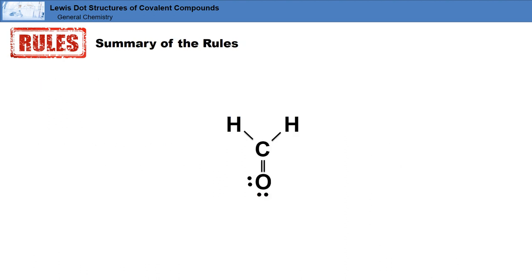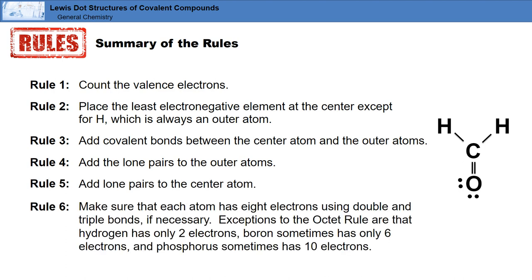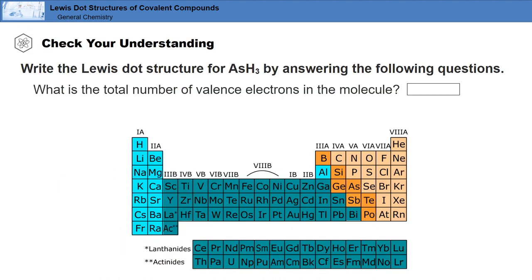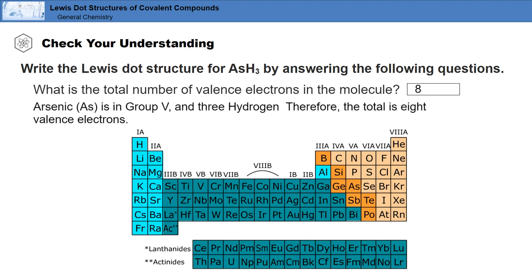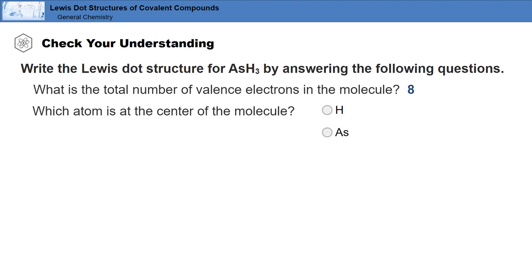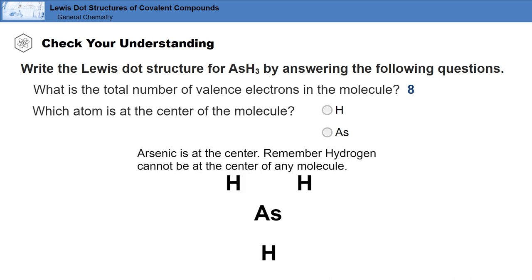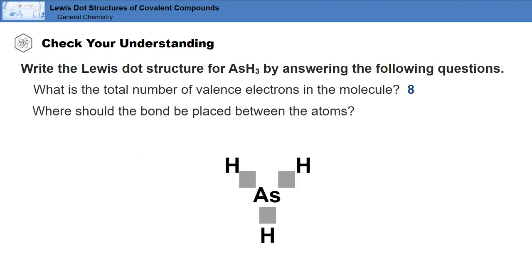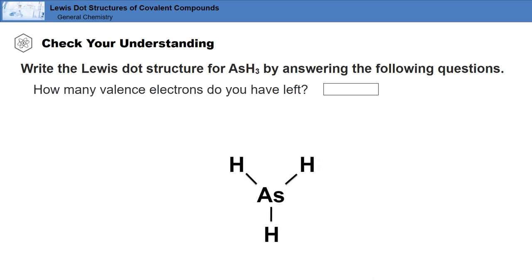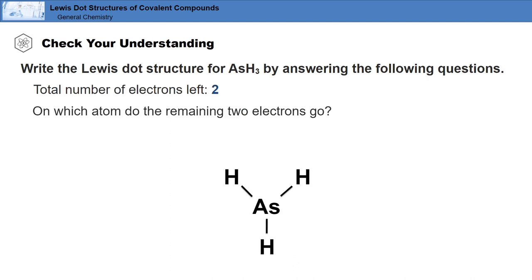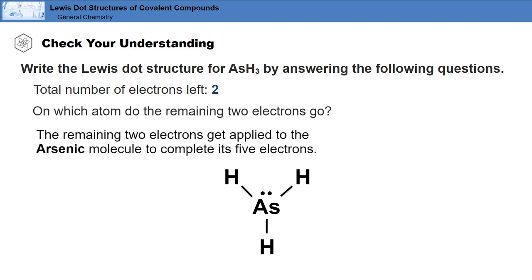Lewis dot structures show how electrons are distributed in molecules. There are six rules. Now let's check your understanding by answering the following questions. What is the total number of valence electrons in the molecule? Arsenic is in group five, and there are three hydrogens. Therefore, the total is eight valence electrons. Which atom is at the center of the molecule? Arsenic is at the center — remember, hydrogen cannot be at the center of any molecule. Where should the bond be placed between the atoms? All three places need a bond. How many valence electrons do you have left? There are two valence electrons left. On which atom do the remaining two electrons go? The remaining two electrons get applied to the arsenic atom to complete its five electrons. This is the Lewis dot structure for arsenic trihydride.